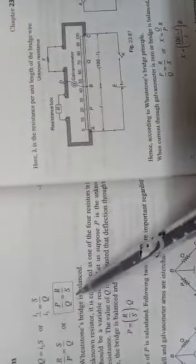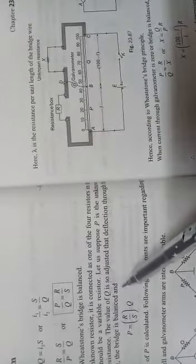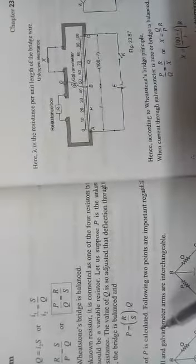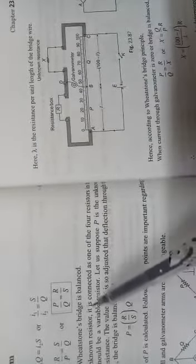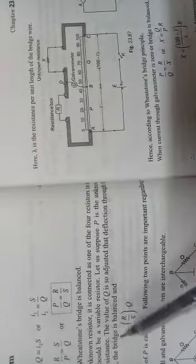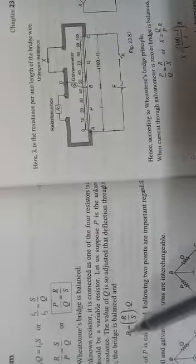You get a situation that P by Q is equal to R by S. When this situation is arrived at, we call that the bridge is balanced. This type of bridge is called Wheatstone bridge because it was developed by a scientist called Wheatstone. Many problems are asked on these Wheatstone bridges, so this specific condition we have to remember.